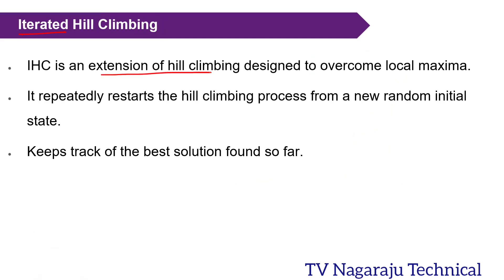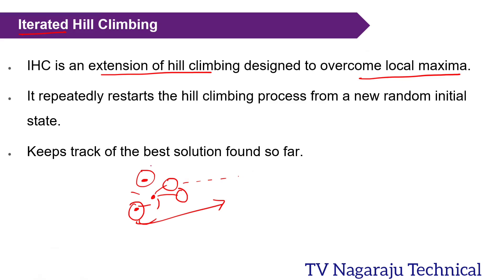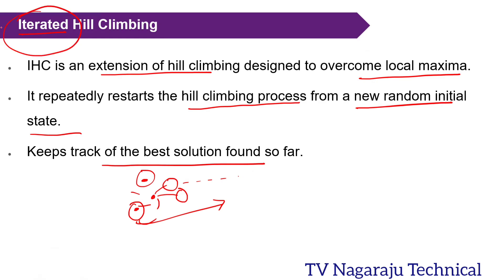To avoid this problem we use iterated hill climbing, which is simply an extension of hill climbing. The main goal is to overcome the local maximum. 'Iterated' means the same approach is repeated multiple times: start at one position, evaluate neighbors, select the best, and so on. In the next iteration, start at another random point and repeat. Among all the solutions found across iterations, we keep the best one.